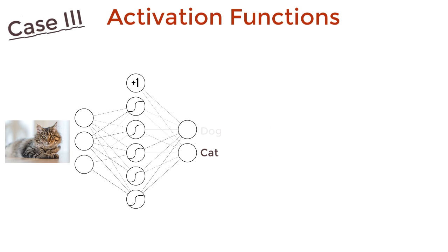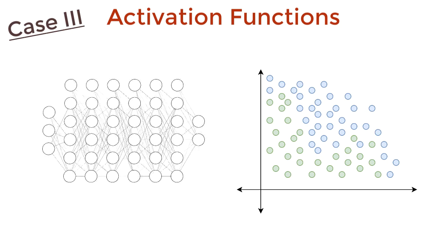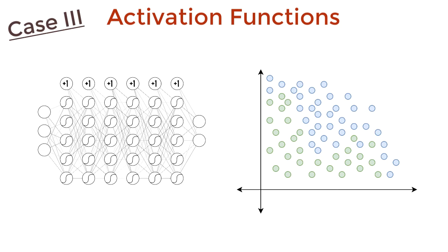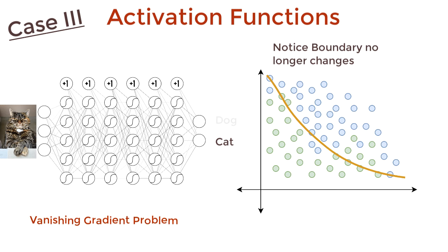But what if the data was even more complicated? When data gets complicated, we add more layers. And let's say that we use a sigmoid function for this and see how that turns out. Even though the network is looking at more examples, it's not learning anything. This is the vanishing gradient problem. It happens because of the sigmoid function.